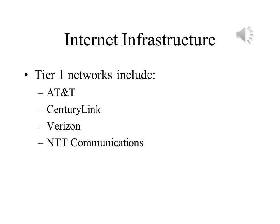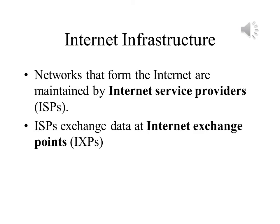Tier 1 networks these days are largely private, owned and operated by private companies including AT&T, Verizon, CenturyLink, and NTT Communications. The networks that collectively form the Internet are maintained by Internet service providers, the companies through which we gain access to the Internet. These ISPs form Tier 2 of the Internet.